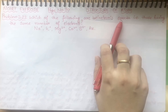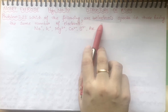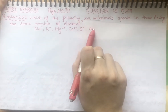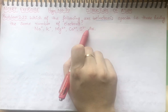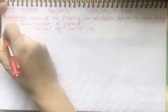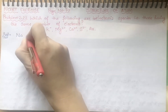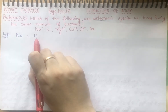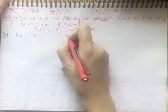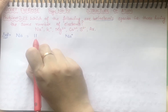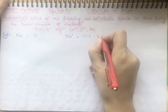Isoelectronic species are ions and atoms which have the same number of electrons. We will take them one by one. Na has atomic number 11, so number of electrons is 11. Na⁺ means 11 minus 1, which is equal to 10.